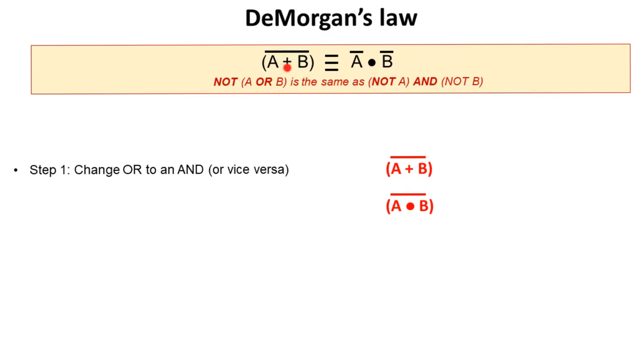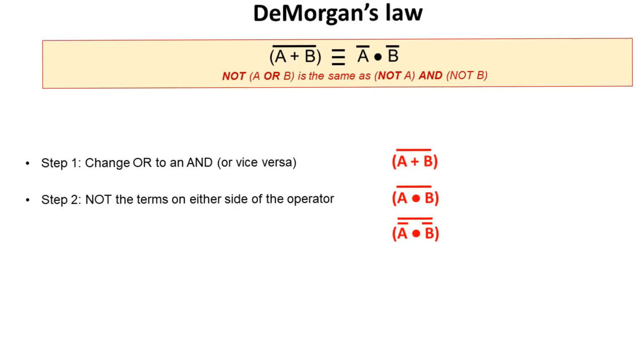So here we have our OR and we want to get to this expression here. So the first thing we do is change the OR to an AND. So that's our first step. Now we NOT the terms on either side of this operator. So we NOT the A and we NOT the B.